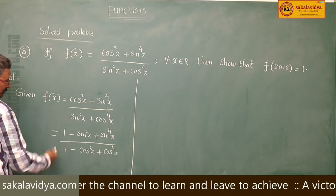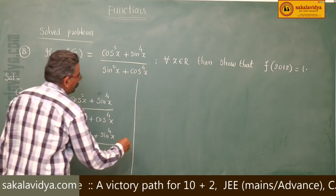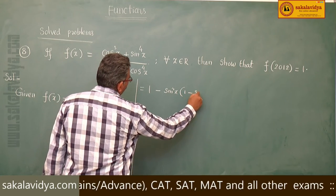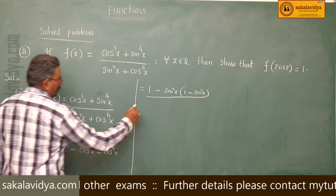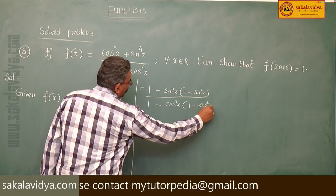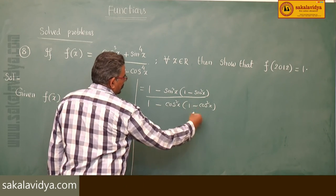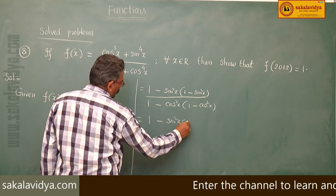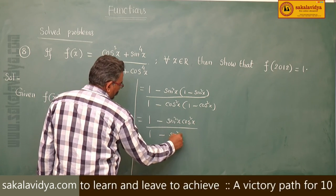From the numerator, take out minus sin squared x common; from the denominator, take out minus cos squared x common. We get 1 minus sin squared x common in the numerator, giving 1 minus sin squared x times cos squared x. In the denominator, 1 minus cos squared x is nothing but sin squared x, giving 1 minus sin squared x times cos squared x.